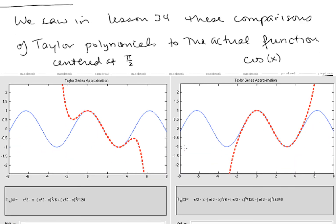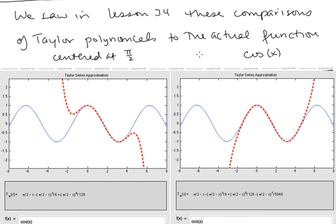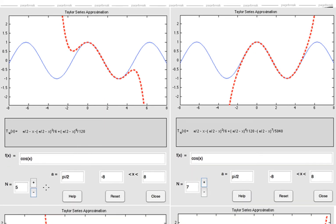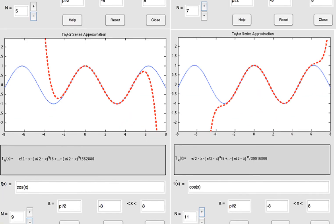Let's look at this idea more closely. From the last lesson, we have comparisons of the Taylor polynomials to the actual function for cosine x — these are Taylor polynomials centered at pi over 2. Cosine x is in blue and the polynomials are in red. We see the 5th, 7th, 9th, and 11th degree polynomials. With higher order polynomials, there is a wider interval around the center for which the polynomial is a good approximation.